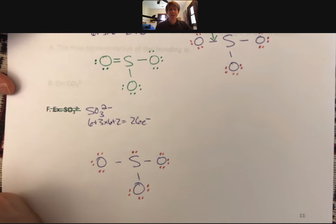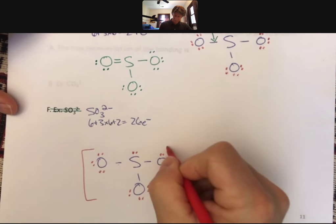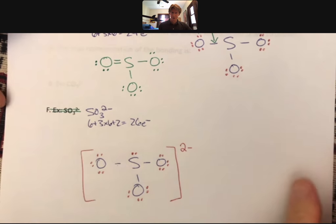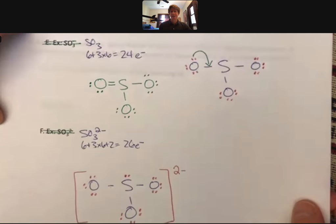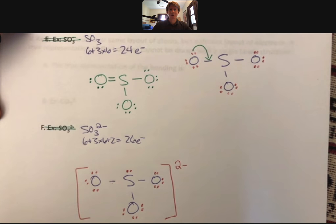And what you see is that for this structure, everybody has an octet. Nothing left to do but put on the charge there. And so these are 2 examples of sulfur-containing compounds that I went ahead and did for you because I want to make sure you know what the right answers are for these.